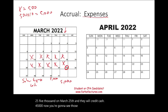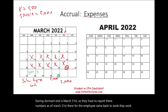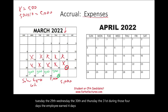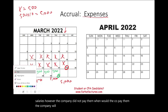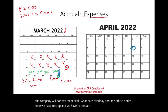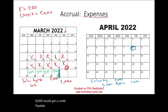You're going to see those entries on the next slide. Their month-end is March 31st, so they have to report their numbers as of that date. The employees came back to work Monday the 28th, Tuesday the 29th, Wednesday the 30th, and Thursday the 31st — four days of salaries earned but not paid. The company will not pay them until Friday, April 8th. So we have to prepare an adjusting entry: debit salaries expense $2,000, credit salaries payable $2,000 for those four days.